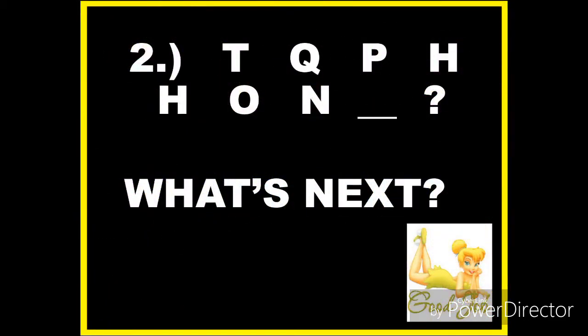Now let's have number two. We have T, Q, P, H, H, O, N. What's next? The clue for number two is that we can see these words in mathematics.